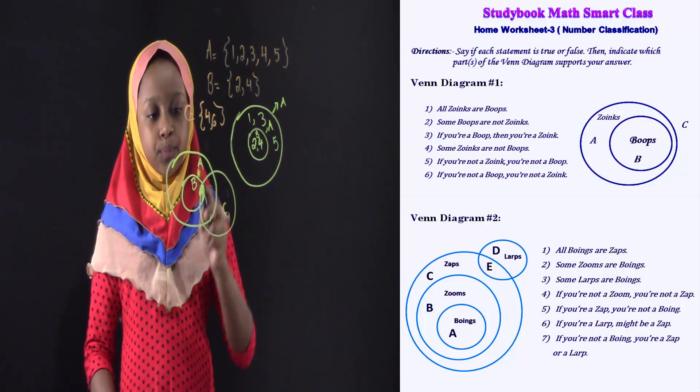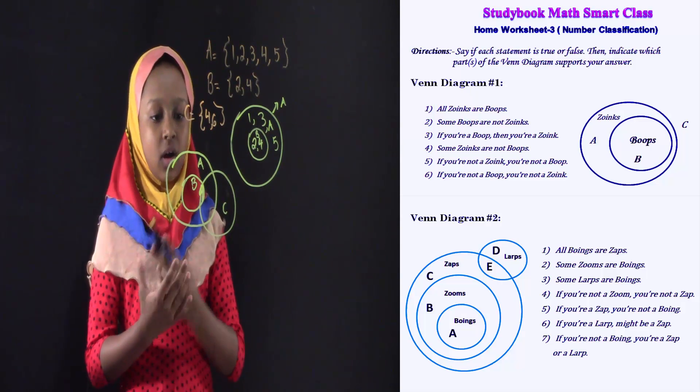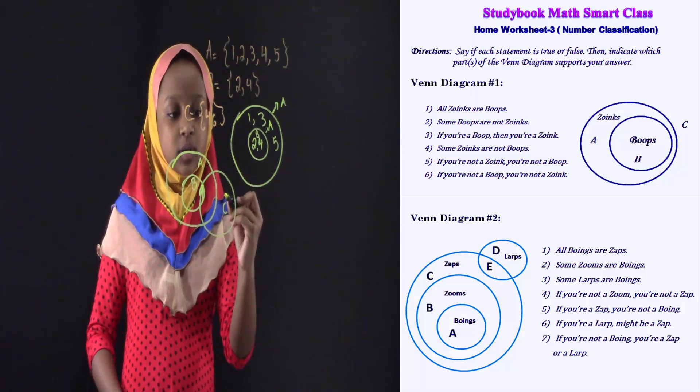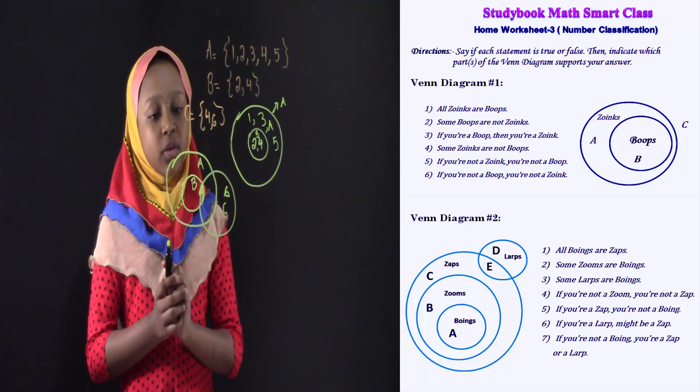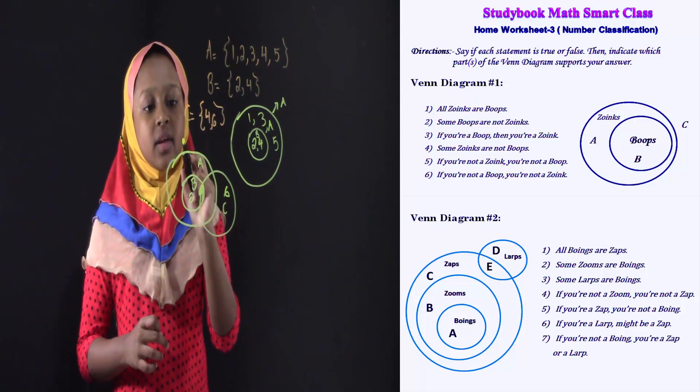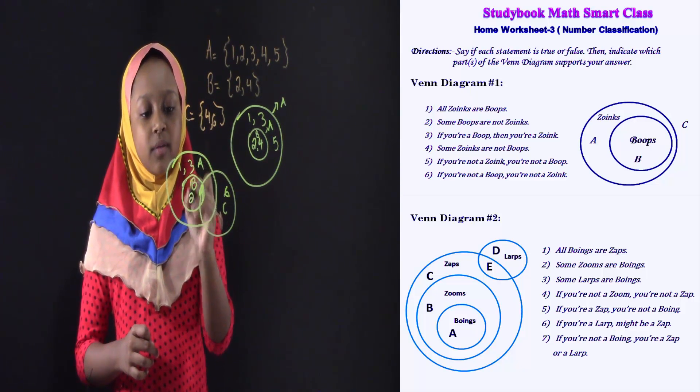So, I'm going to write four over here. And the rest are different. And six is only in C, so we're going to write here six. And the rest of the numbers, over here, we have two. And for A, we have one, three, and five.